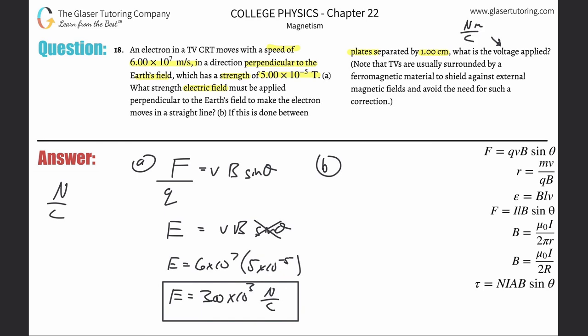So what we're saying is that the voltage is equal to the electric field multiplied by the distance. So here what we find is that the electric field we found is 3 times 10 to the three, and the distance is one centimeter.